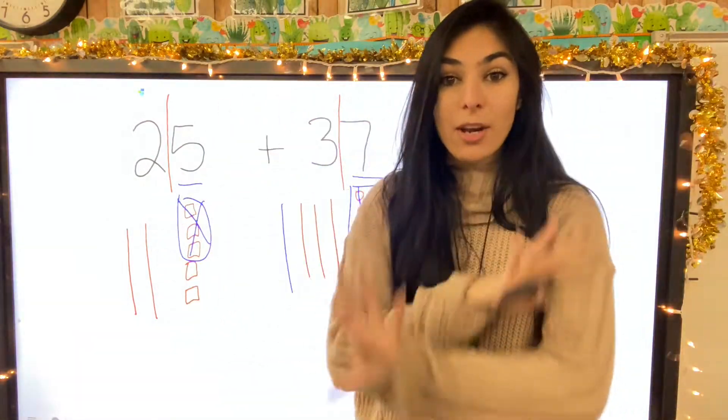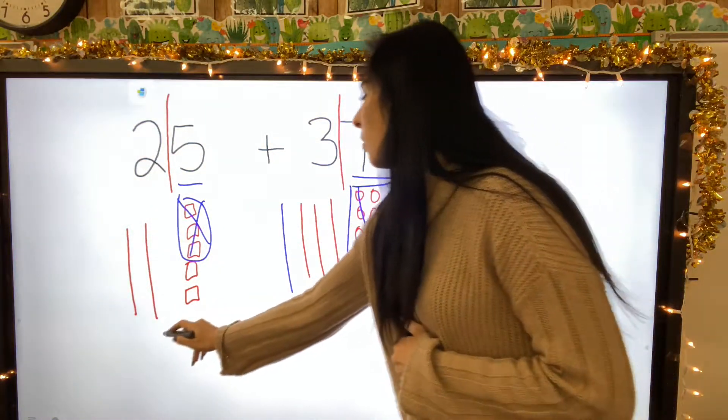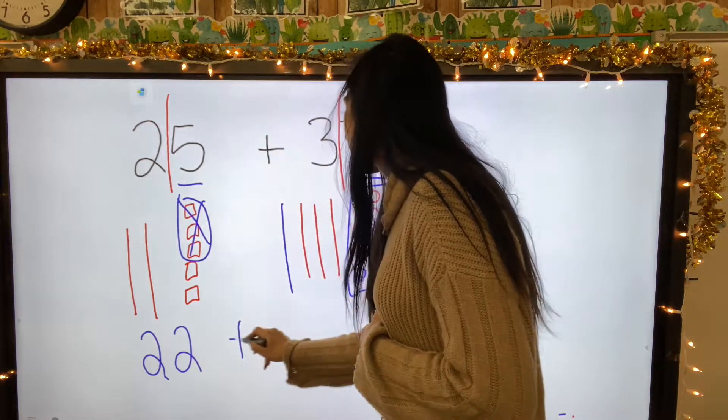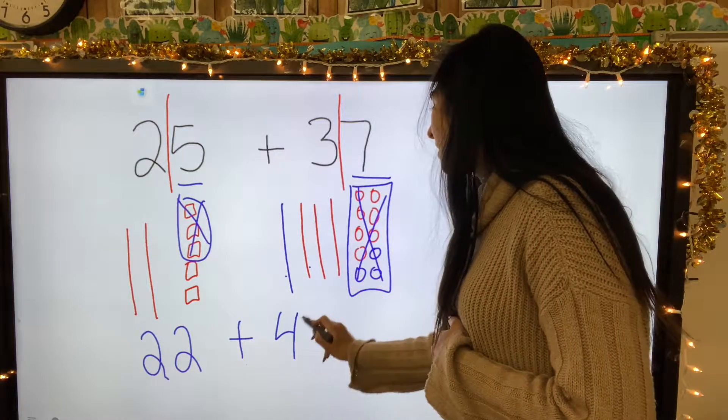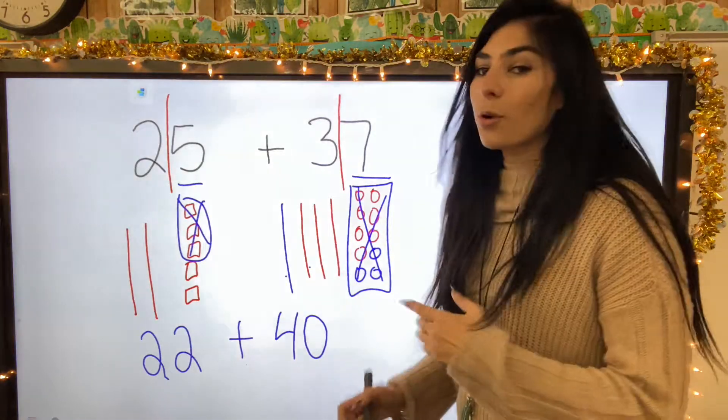Now let's go ahead and recount and see what we got. So now I have ten, twenty, one, two, plus ten, twenty, thirty, forty. We don't have any ones because we turned that into the ten. So twenty-two plus forty.